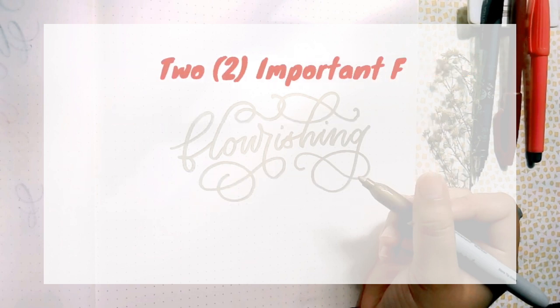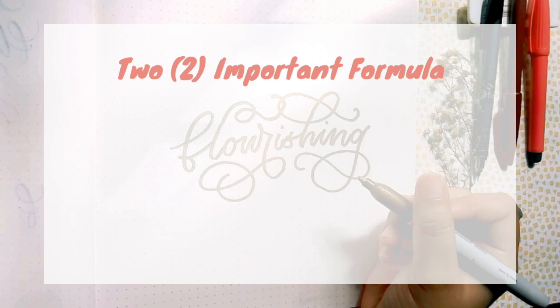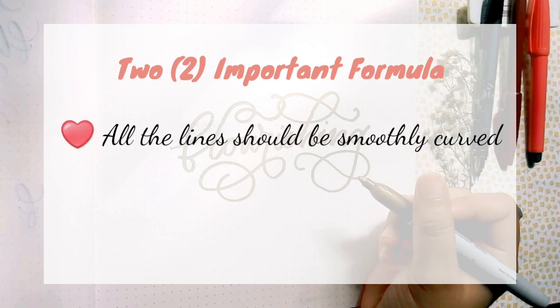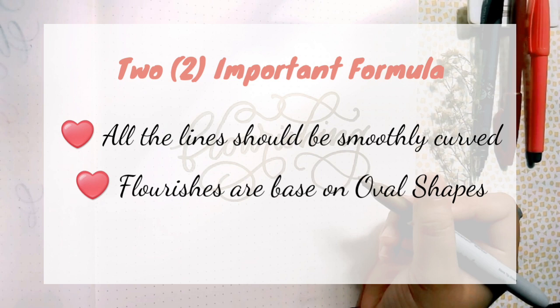So these are the two important formulas to create beautiful flourishes. Number one, all the lines are smoothly curved. Number two, flourishes are based on oval shapes.